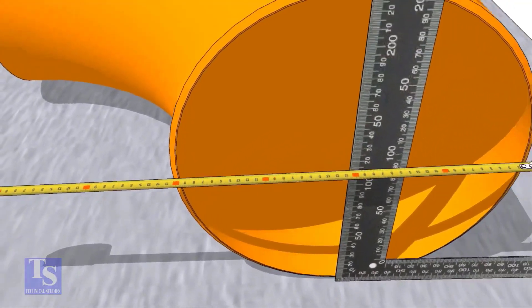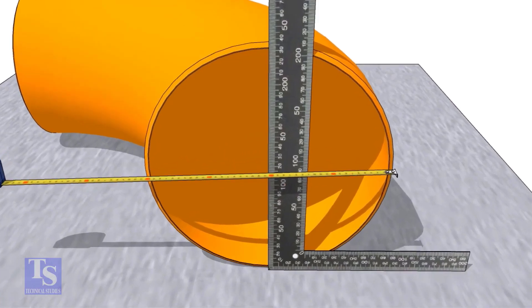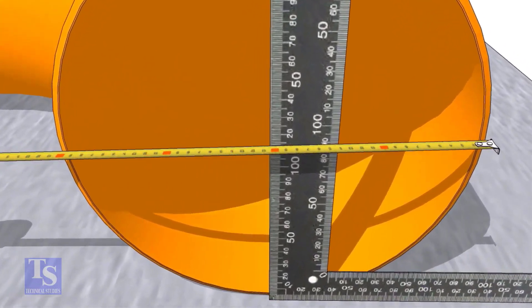Put a right angle at the center of the elbow. Make sure the distance from the edge of the elbow to the face of the right angle is equal.